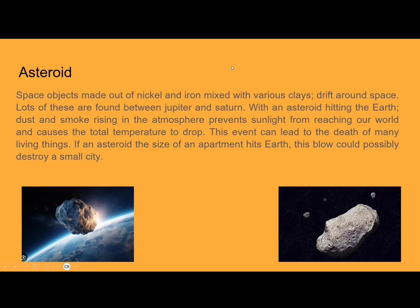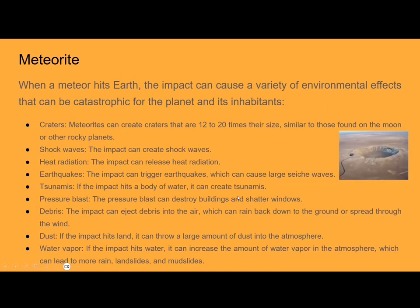This event can lead to the death of millions of people and destroy the entire Earth. When a meteor hits Earth, the impact can cause a variety of environmental effects that can be catastrophic. Meteorites can create craters that are 12 to 20 times their size depending on speed, similar to those found on the moon. The impact can also release shock waves, create heat radiation, and trigger earthquakes.